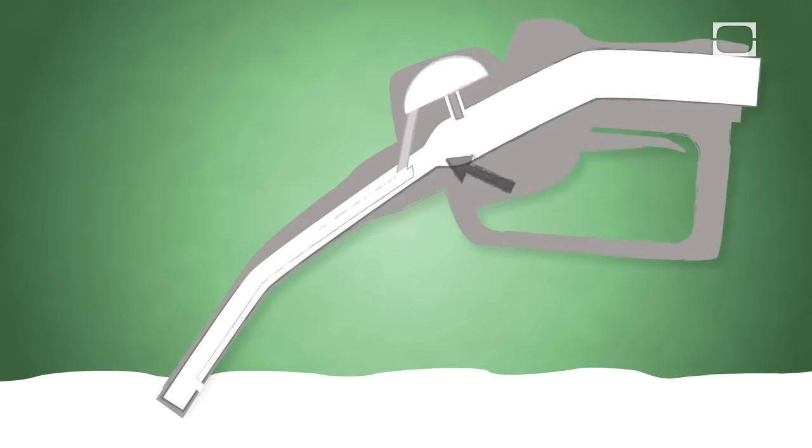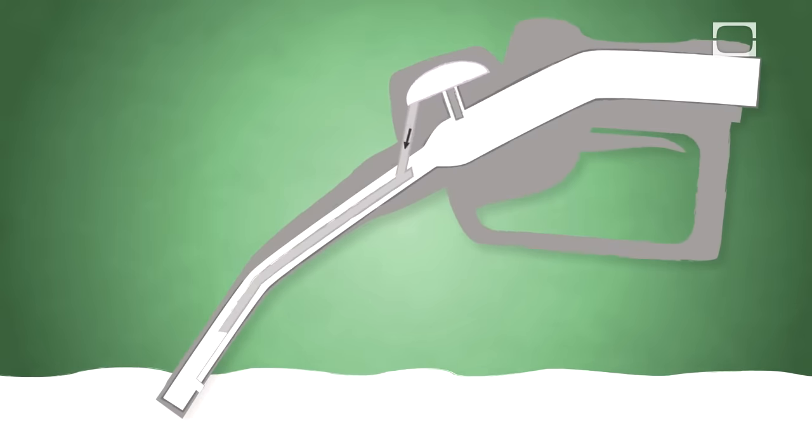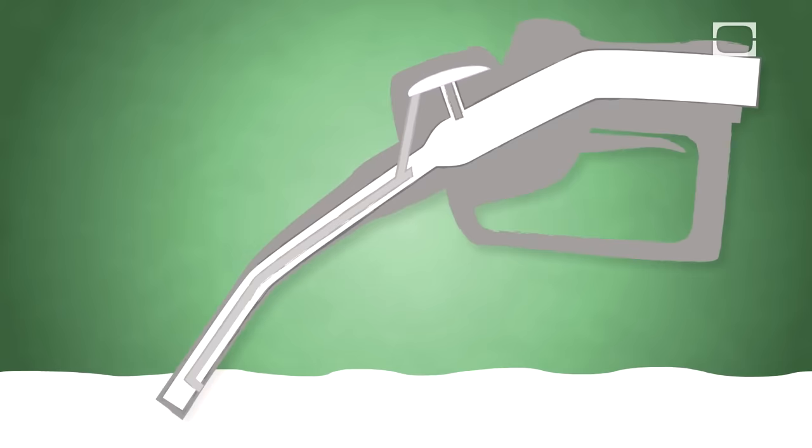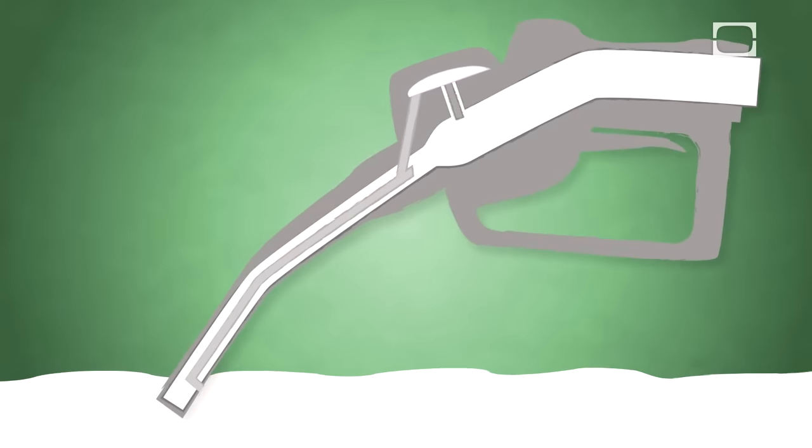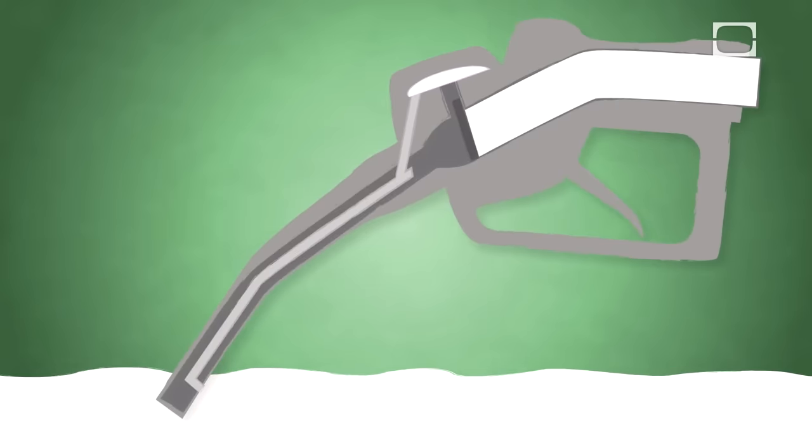The Venturi tube, all of a sudden, changes in pressure, which creates suction on the other end of this pipe, which sucks the diaphragm, which collapses a little bit, triggering an automatic shutoff.